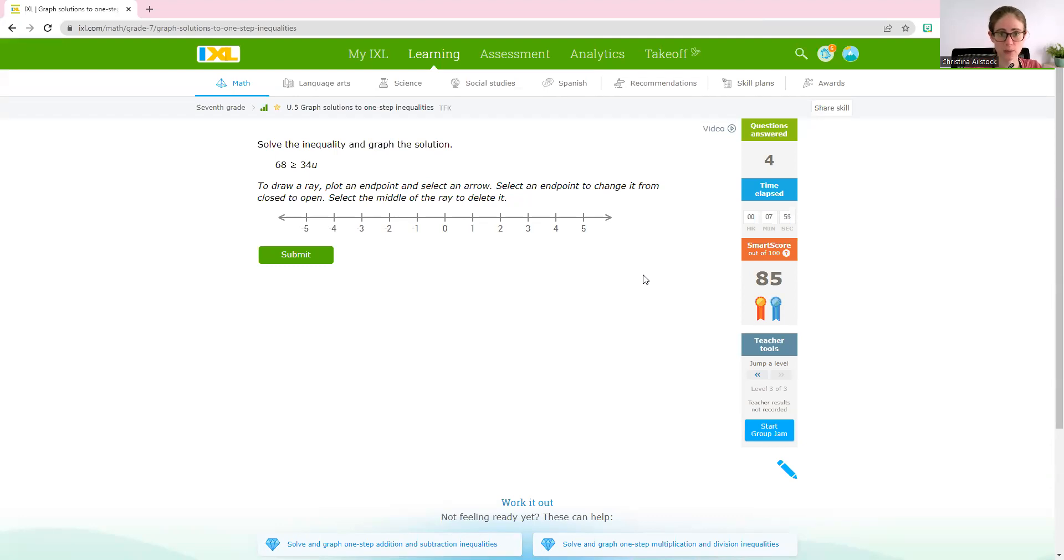All right, this is a really good one for us to look at, because not only are the numbers larger, it's also written a little differently. And we'll get some of these kind of questions once you get into the higher SMART scores and start to get a little bit closer to that challenge zone. We have 68 is greater than or equal to 34u. All right. Even though my variable's on the other side, I can still solve. We had problems like that in class before. Now, we have 34 times u. The inverse of multiplication would be division. 68 divided by 34 gives us 2 is greater than or equal to u.